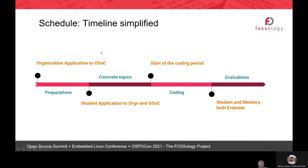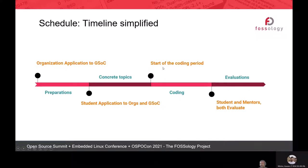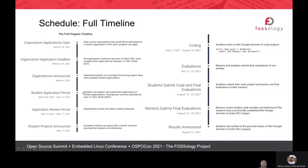Regarding the timeline — this is now a 10-week program for the coding period. It starts with organizations making applications for Google Summer of Code. The program started with organization applications opening on January 29th this year, with the deadline on February 19th. After the org application period, selected organizations were announced — around 200+ organizations were selected from approximately 700 that participated.